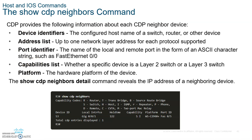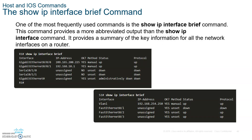The 'show cdp neighbors' command displays information about neighboring Cisco devices. If you're not using this command, disable it — an attacker could use it to gather information about neighboring devices. Other important commands: 'show protocols', 'show version', and 'show ip interface brief', which tells you the up/up Layer 1 and Layer 2 status of interfaces.